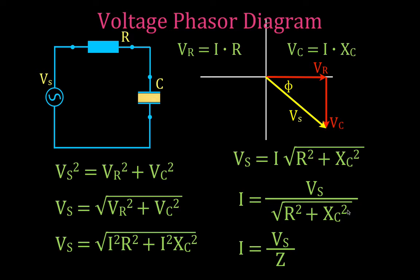I didn't specify whether this is the RMS voltage or the peak voltage. You should know that if you use the RMS voltage you get the RMS current, and if you use the peak voltage you get the peak current. Please remember to keep those straight — don't mix them up.